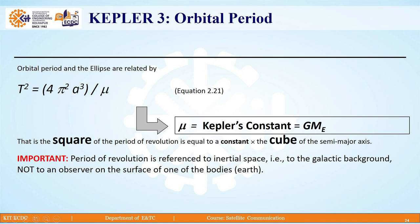Here one important note is given: period of revolution is referenced to inertial space, that is to the galactic background, not to an observer on the surface of one of the bodies on earth.